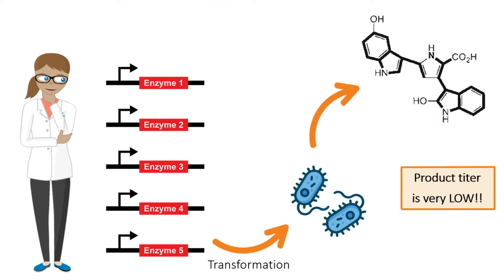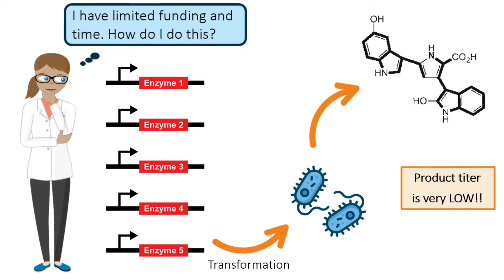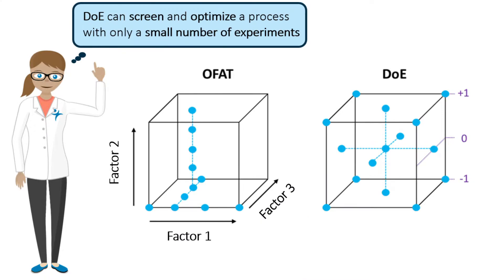Coming back to the previous example, Amy is working alone in this project. While she has guidance from her mentors and prior research from literature, how will she attempt to increase and optimize the production of the antibiotic? It is near impossible to conduct and test all different combinations of genetic factors in an environment with limited funding and time. Amy could instead use design of experiments, or DOE, to quickly screen through the main pathway components and then optimize the process for maximum production output with only a smaller number of experiments.